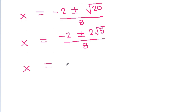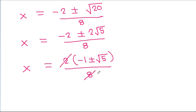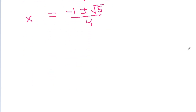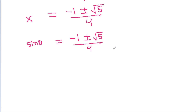And x is equal to, we can take 2 common, so it is (−1 ± √5) / 4. Therefore x equals sinθ equals (−1 ± √5) / 4, and θ is equal to 18 degrees.